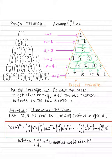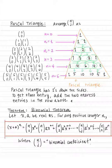Now, the Binomial Theorem: let x and a be real numbers. For any positive integer n, (x + a)^n equals n choose 0 times x^n, plus n choose 1 times a times x^(n−1), plus n choose 2 times a² times x^(n−2), and so on. In general, each term has the form n choose j times a^j times x^(n−j), where n choose j is called a binomial coefficient. Those binomial coefficients are defined by Pascal's Triangle.